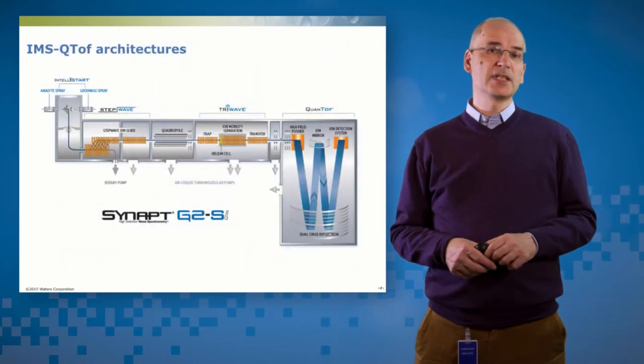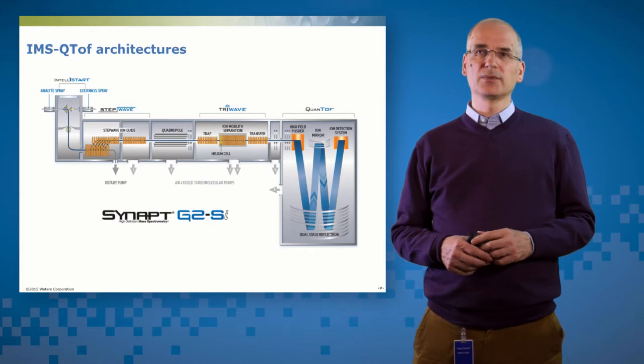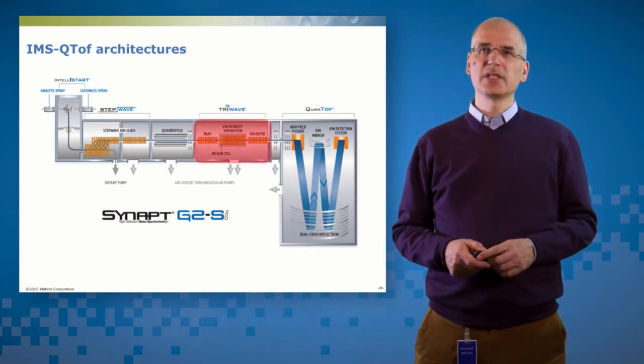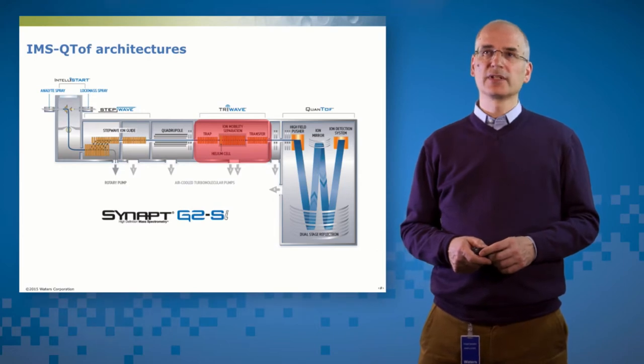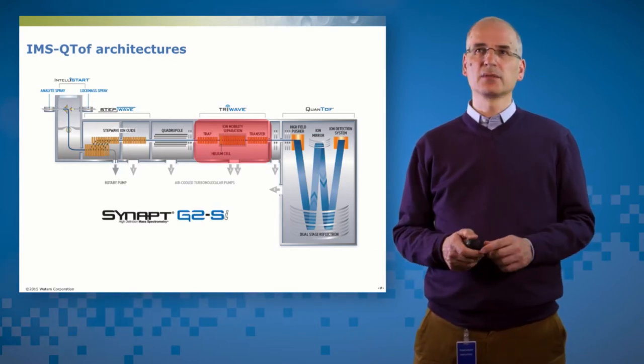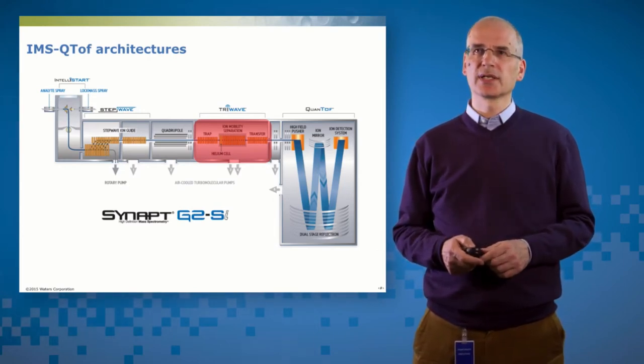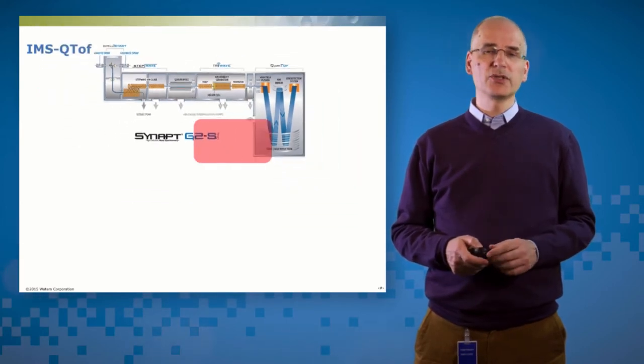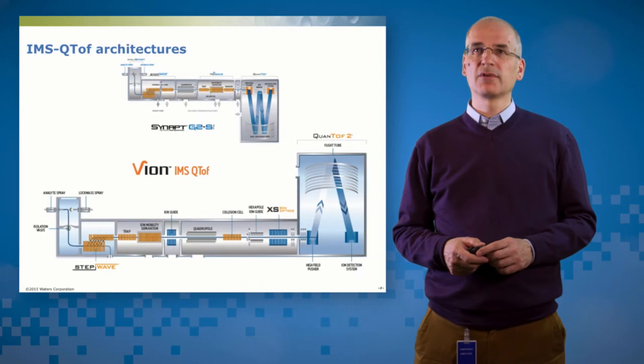So the ability to do these kinds of experiments has been around for a while with the Synapt family of products. And in the Synapt family of products, the ion mobility separation is in the centre of the instrument in the tri-wave. And it's bracketed by two independent collision cells, one before and one after.